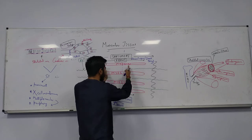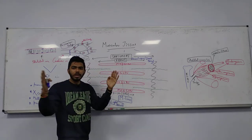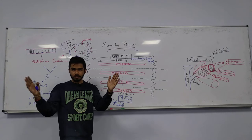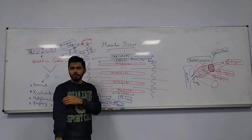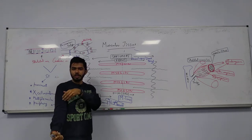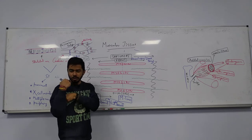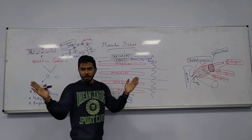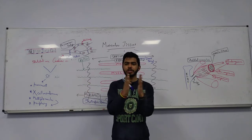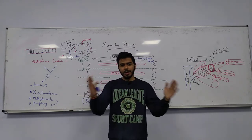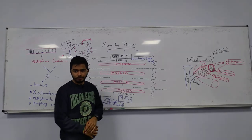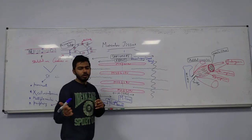The myosin cross bridge attaches to the actin filament and brings it towards the center of the sarcomere, causing muscle contraction — your muscle gets shortened. The myosin heads bring the actin filaments towards the center of the sarcomere, shortening the length of the muscle fiber.